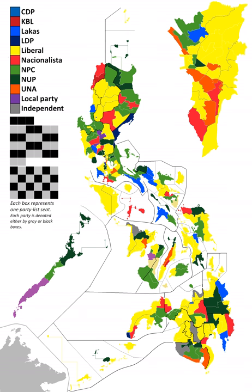The Philippines uses parallel voting for the House of Representatives: first past the post on 234 single-member districts, and via closed party lists on a 2% election threshold computed via a modified Hare quota, three-seat cap and no remainders, on 58 seats. Parties with less than 1% of the first preference vote win one seat each if 20% of the party list seats are not filled up. Major parties are not allowed to participate in the party list election.